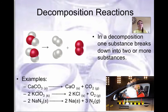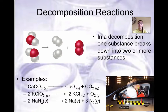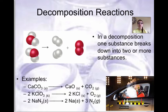The first type of reaction we'll look at is decomposition. In a decomposition reaction, one substance breaks down into two or more substances. Decomposition reactions usually have more products than reactants. Consider the reaction that occurs in an airbag in a car — sodium azide breaks down into sodium and nitrogen gas. We know it's decomposition because sodium azide was a single reactant and it decomposed into two substances.